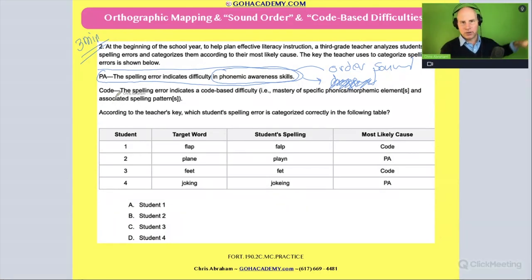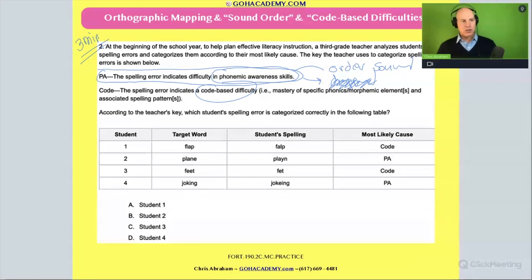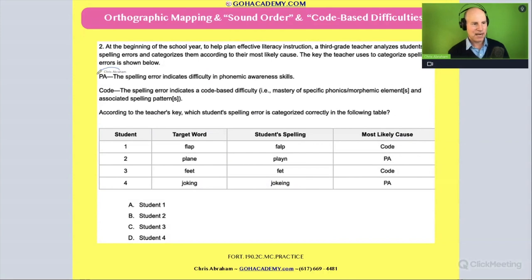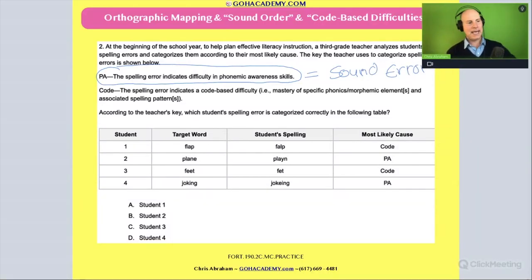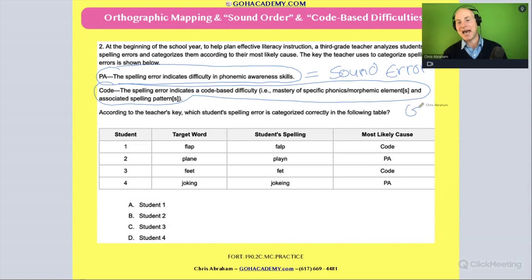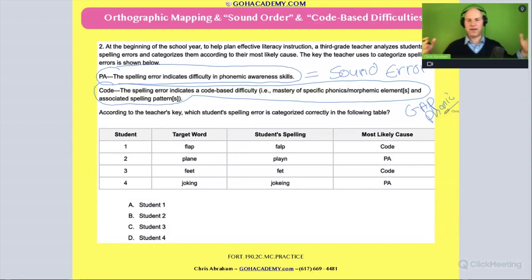And then another type of spelling error is more code-based, meaning they just didn't know the phonics rules. So for the purposes of analyzing this, when we see a PA error, we're going to associate that with a sound error. And if we see code, we're going to associate that with some type of gap in phonics — some type of phonics pattern or orthographic mapping rule they don't know. Just to simplify it.